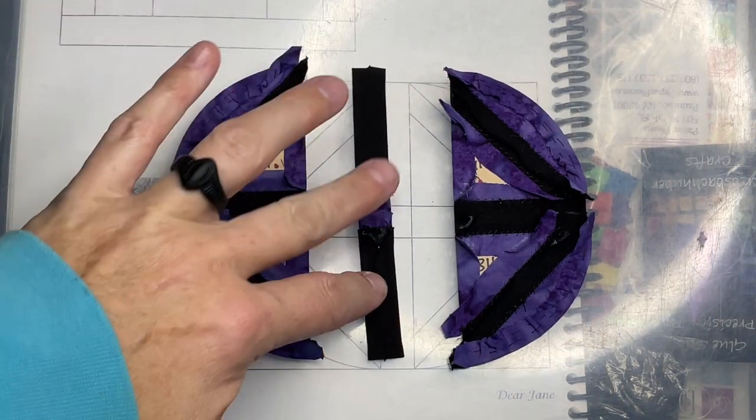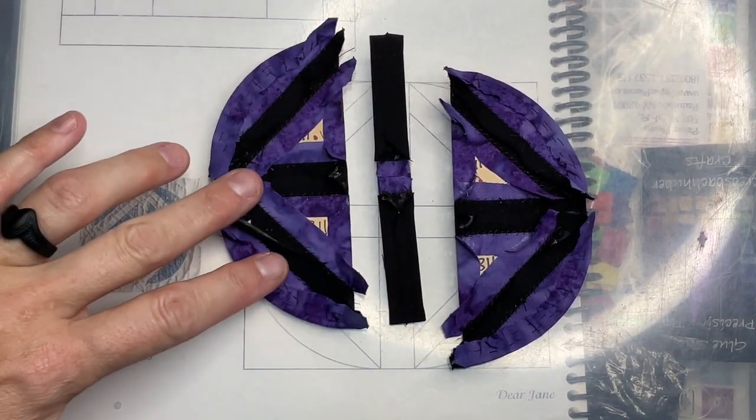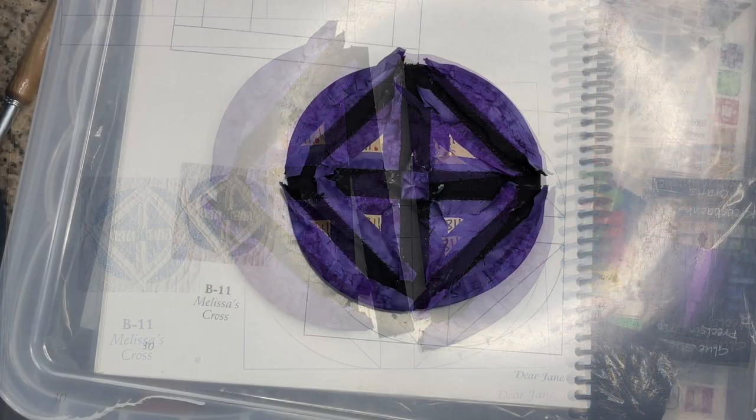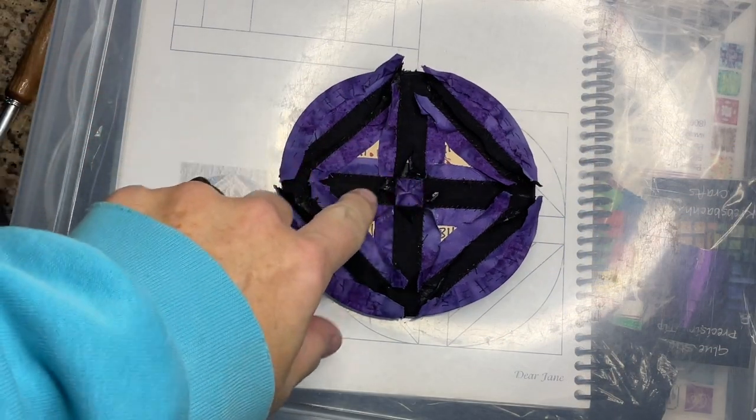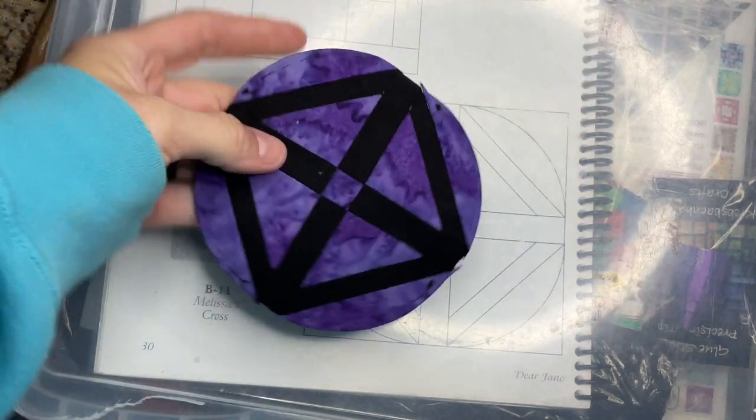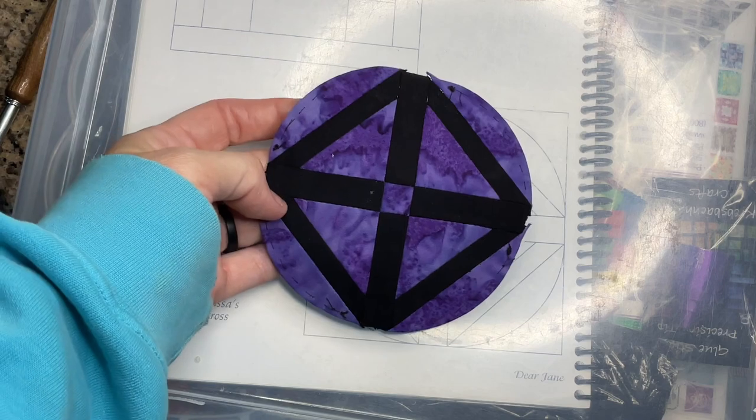So I've assembled this center row, and now I'm going to connect it to both halves. So I've attached both pieces to the middle section, and now I have this whole circle is completed. Now it's a matter of putting this on the square.